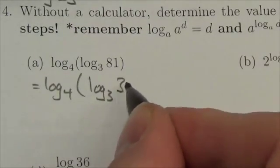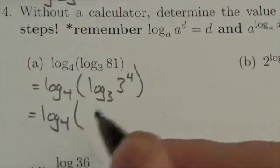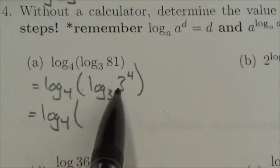And so, and it turns out that it is. 81 is 3 to the fourth and so log base 3 of 3 to the fourth.